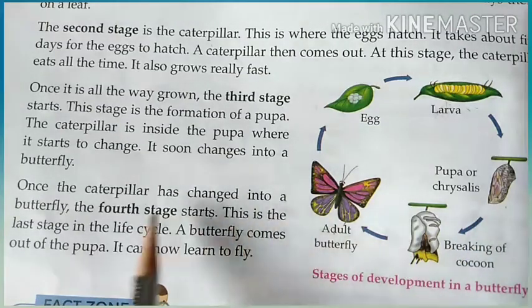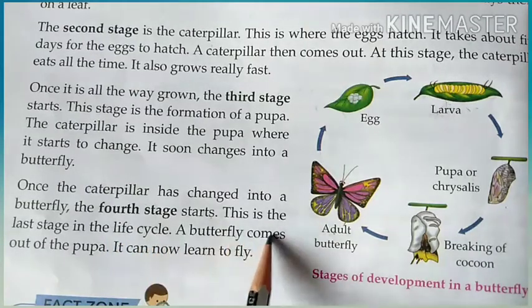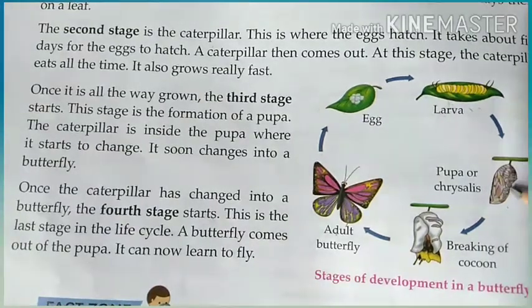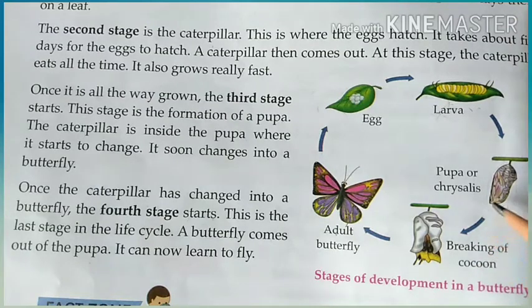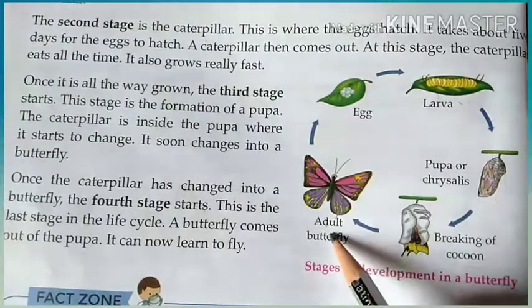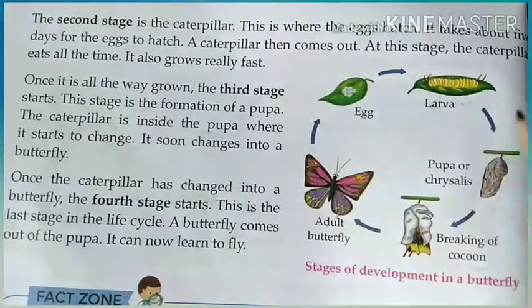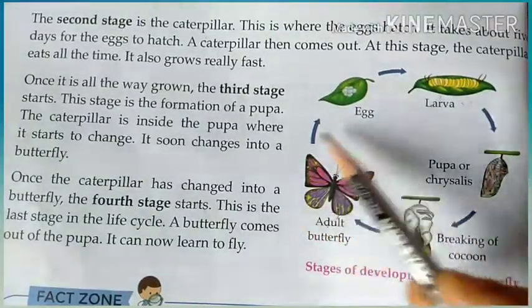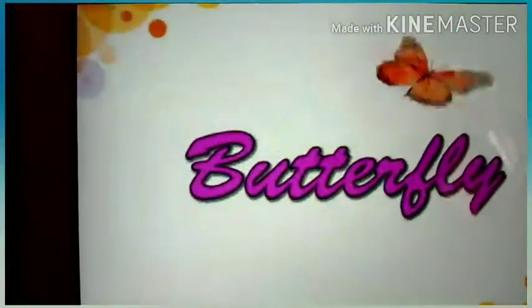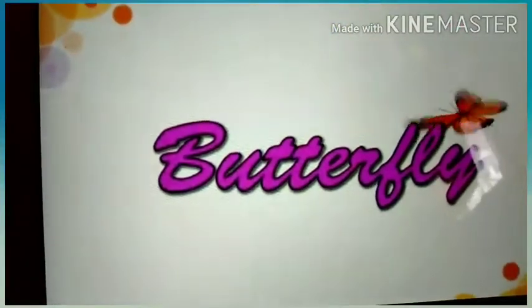The fourth and last stage is the adult butterfly. The butterfly comes out of the pupa and will now learn to fly. The outer layer of the pupa is also called the cocoon. So the butterfly goes through four stages: egg, caterpillar, pupa, and adult butterfly.